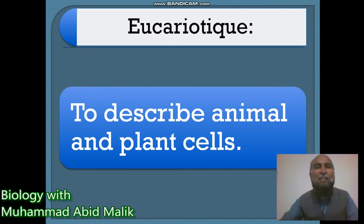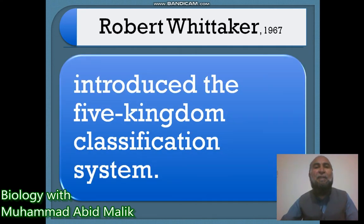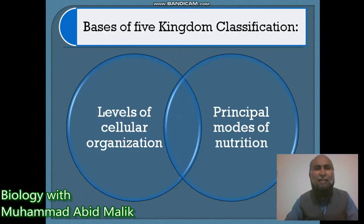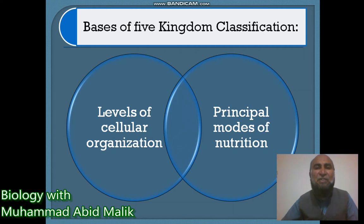Now we are going forward towards the Five Kingdom Classification System — on which basis and who proposed this. Robert Whittaker in 1967 proposed the Five Kingdom Classification System. It was proposed on mainly two points: first, the level of cellular organization, and second, the principal modes of nutrition.